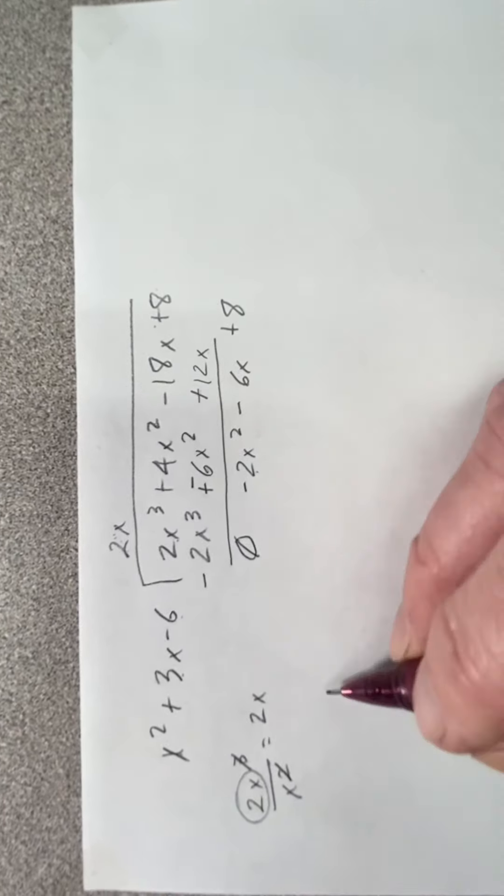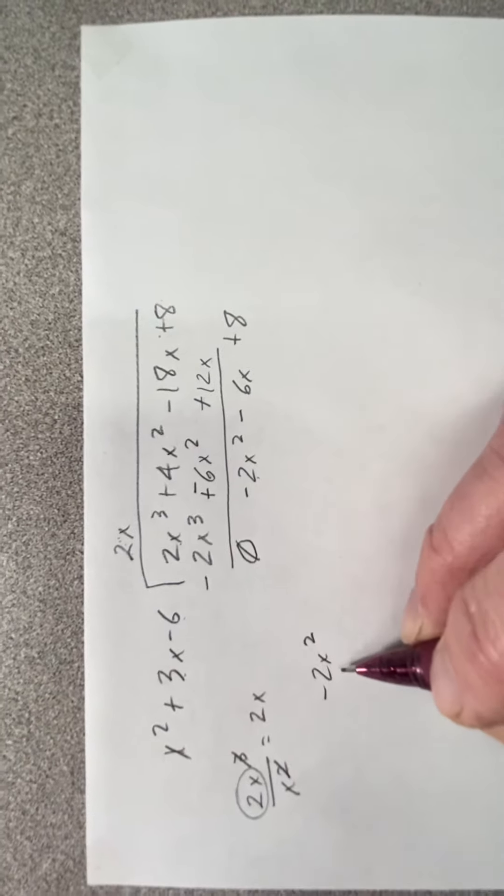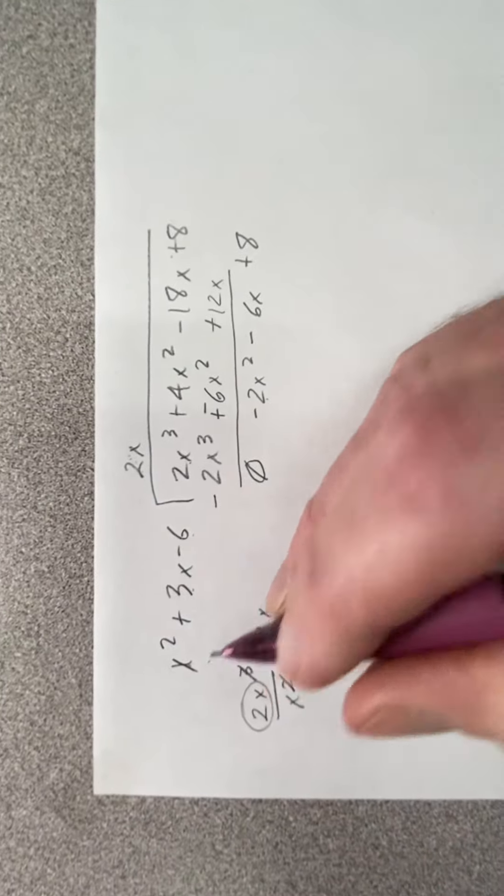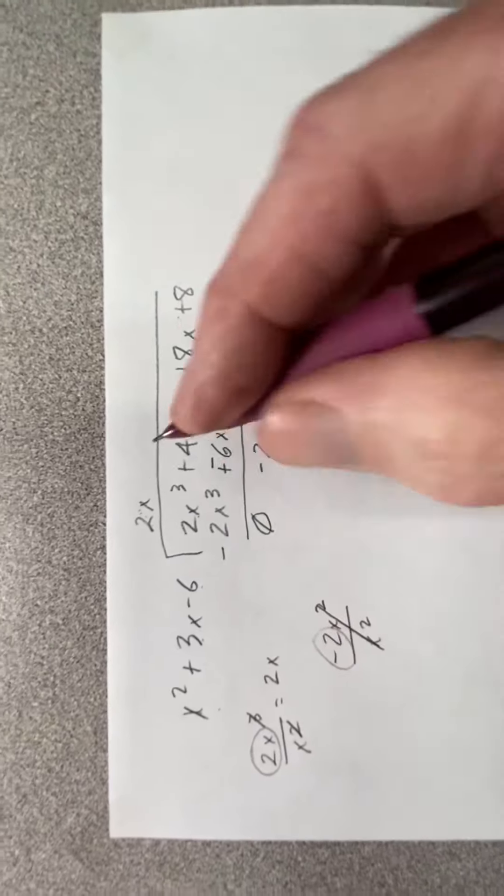I now have a first term of negative 2x squared divided by my first term of x squared, leaves me the negative 2.